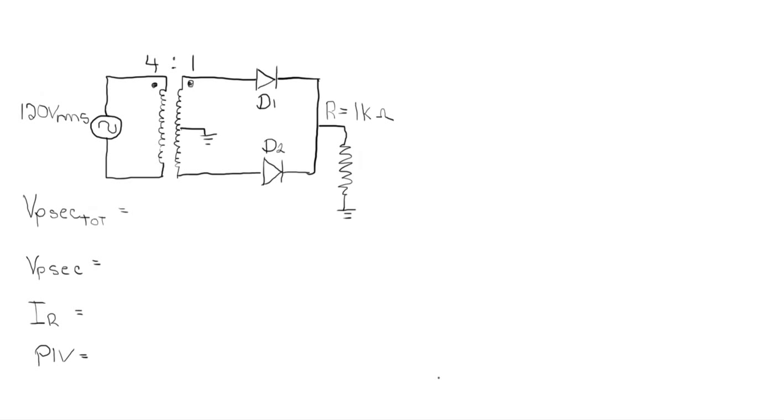So I've drawn the circuit here. The first thing that we're going to have to figure out or find is going to be the peak voltage, as mentioned in a previous video. The number one thing you've got to find is peak voltage. So we're going to find V peak primary.